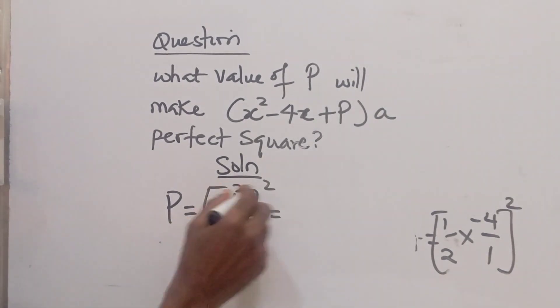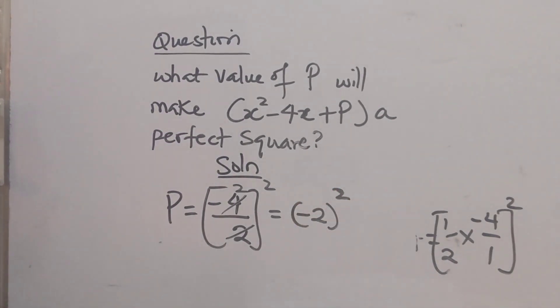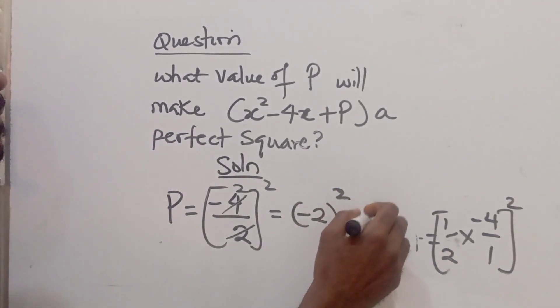So this cancels, this is 2. So minus 2 squared. So minus 2 squared is going to give us what? 4.